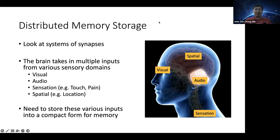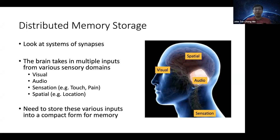This distribution has something to do with the inputs as well. There are regions near the ears for audio, regions near the eyes for visual memory. Spatial memory involves place cells and grid cells, probably in the neocortex or regions involved in navigation. Then you also have sensation — pain, touch — stored in different regions of the brain. The brain is able to piece together all this different sensory information and put it into one coherent whole.